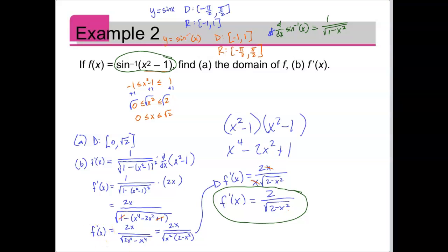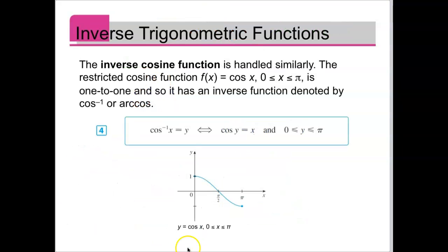Now let's define inverse cosine. It's also a wave function, so it's not one-to-one and we can't have an inverse unless we restrict its domain. We restrict it near the origin for simplicity. Cosine is just a shifted version of sine and starts at its amplitude, so we can't restrict it in the same place as sine. Instead, we restrict cosine to be between 0 and π.